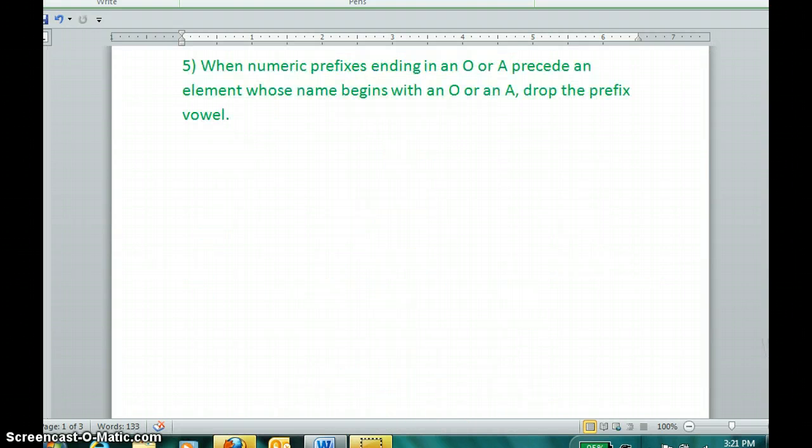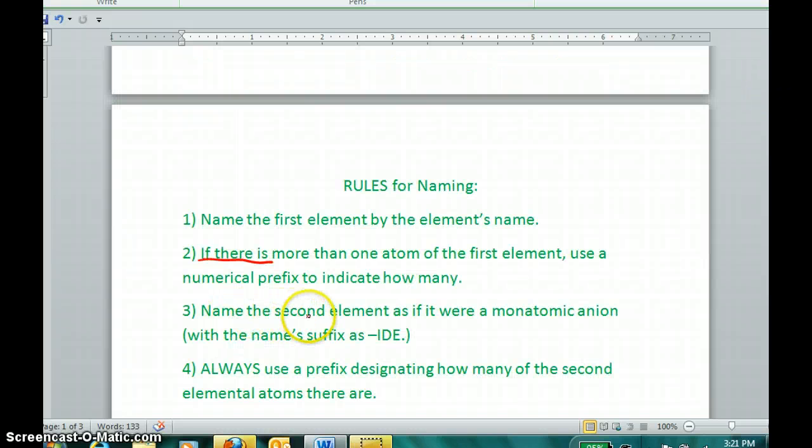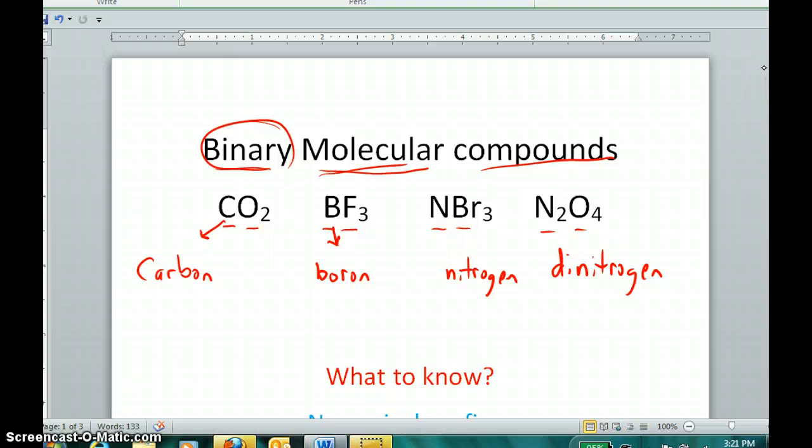Now, third rule, very simply, is name the second element as if it were a monatomic anion. And of course, all the monatomic anions of nonmetals have a name that ends in IDE. So if the second element is oxygen in this compound, I would use oxide as the name for the second part. And since fluorine is in this compound, I would use fluoride as part of the name. If I have bromine, the second part of this name would be bromide. And if I see oxygen, the second part of this name would be oxide. So carbon may be something oxide. Boron may be something fluoride. Nitrogen may be something bromide. And dinitrogen may be something oxide.